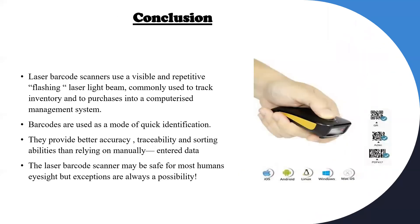As a conclusion, laser barcode scanners use a visible and repetitive flashing laser light beam, commonly used to track inventory and purchases into a computerized management system. Barcodes are used as a mode of quick identification. They provide better accuracy, traceability and sorting apparatus than relying on manually entered data.